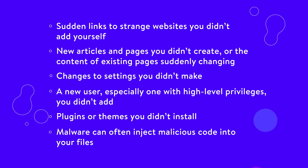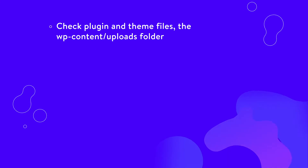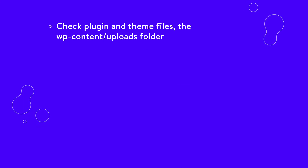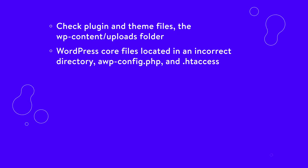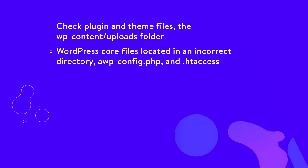Malware can often inject malicious code into your files. Check plugin and theme files, the WP content uploads folder, and WordPress core files located in an incorrect directory, as well as wp-config.php and .htaccess. You should back up your site and have an understanding of the code before making any sensitive changes. If you connect to your site with FTP, you can sort by recently modified files for code that shouldn't be there.